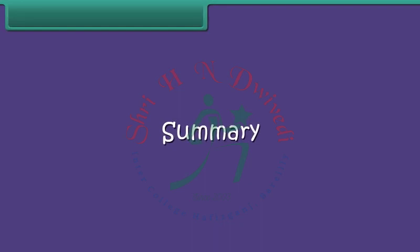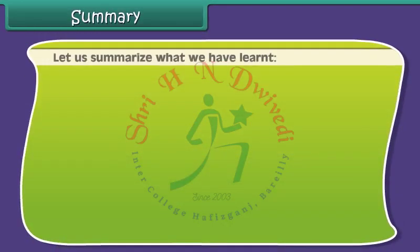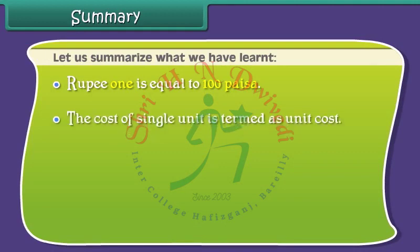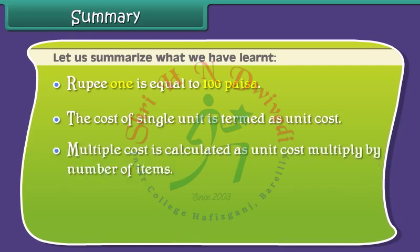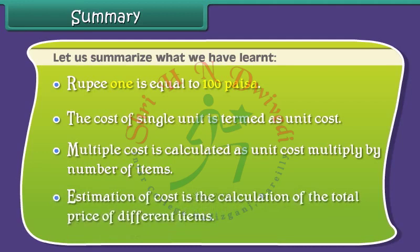Summary: let us summarize what we have learnt. Rupee 1 is equal to 100 paisa. The cost of a single unit is termed as unit cost. Multiple cost is calculated as unit cost multiplied by number of items. Estimation of cost is the calculation of the total price of different items.